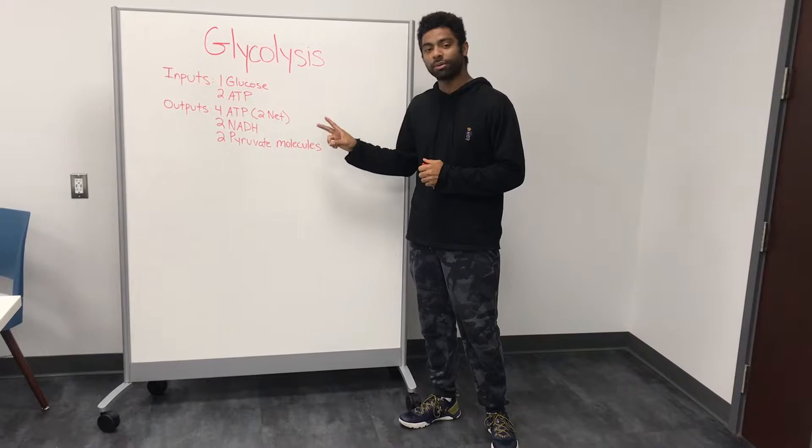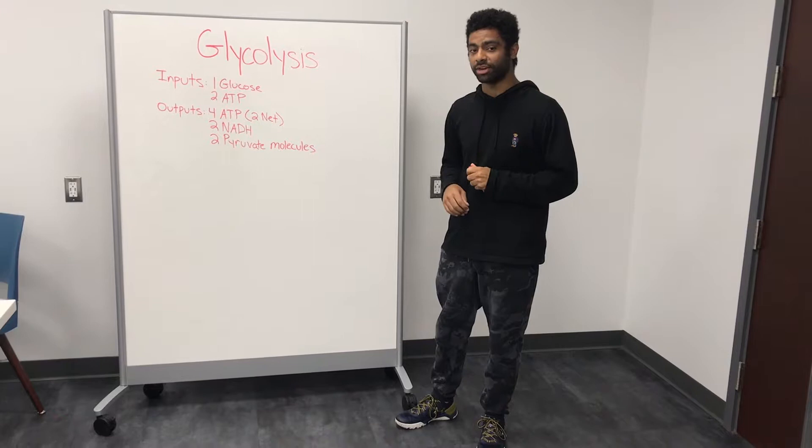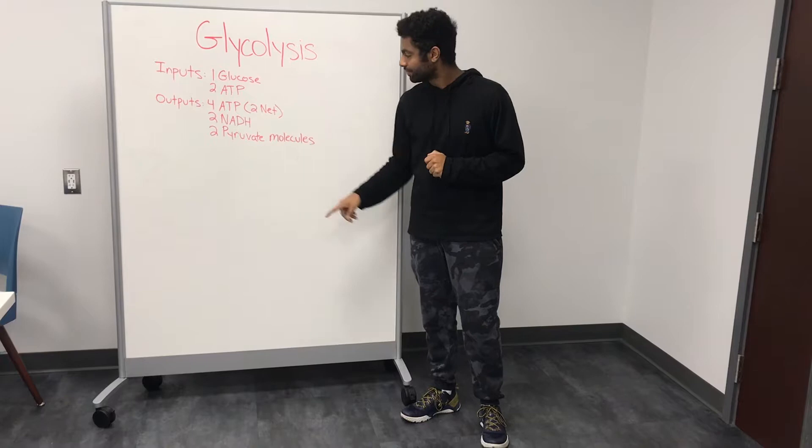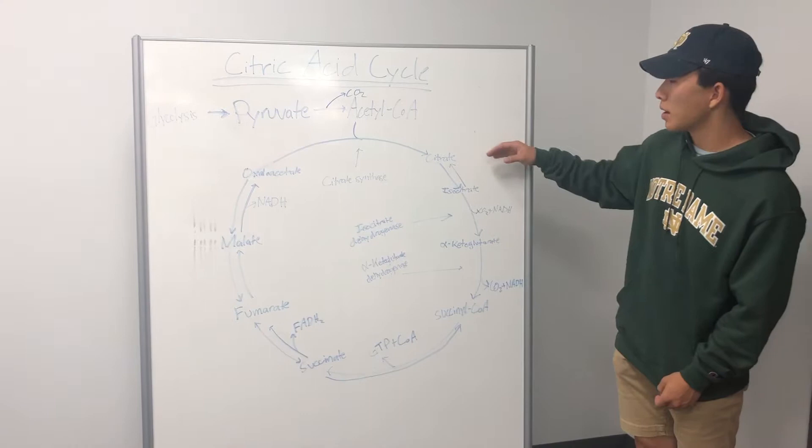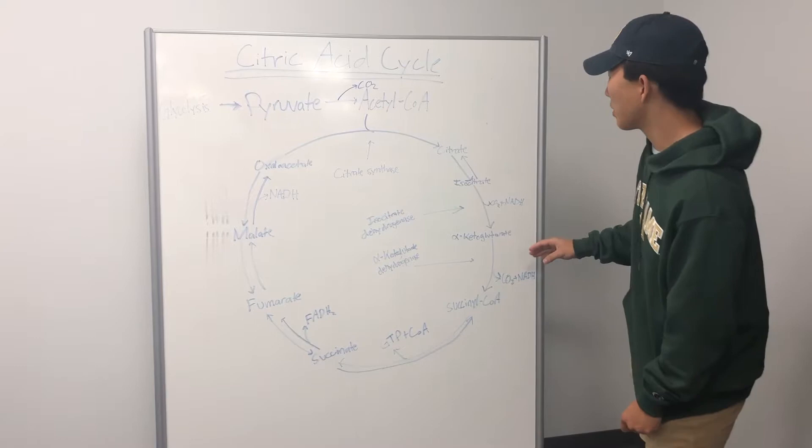You end up with four ATP as output, two of which are net. Because the bonds in glucose store a lot of energy, when you break them down you release that energy. You also get energy in the form of reduced electron carriers — two NADH — and two pyruvate molecules.